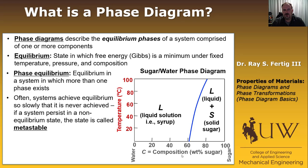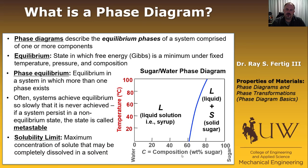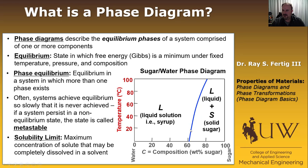The final definition with respect to this phase diagram is the solubility limit, which is the maximum concentration of the solute that can be completely dissolved in a solvent. Going back to our diagram at 20°C, the solubility limit — how much sugar can be dissolved in water — is 65 weight percent. This boundary line on the diagram actually represents the solubility limit for this particular system.